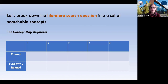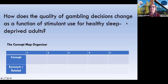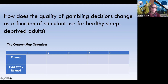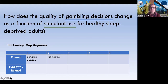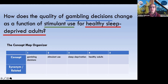Now let's use a concept map organizer — the simplest organizer that helps break down the concepts in our question into the most significant concepts. For the question 'How does the quality of gambling decisions change as a function of stimulant use for healthy sleep-deprived adults?' we have at least four things: a population of healthy adults; gambling decisions as what we're measuring; the intervention, which is stimulant use; and the condition of sleep deprivation. A word like 'quality' is difficult to pin down, so we focus on gambling decisions.